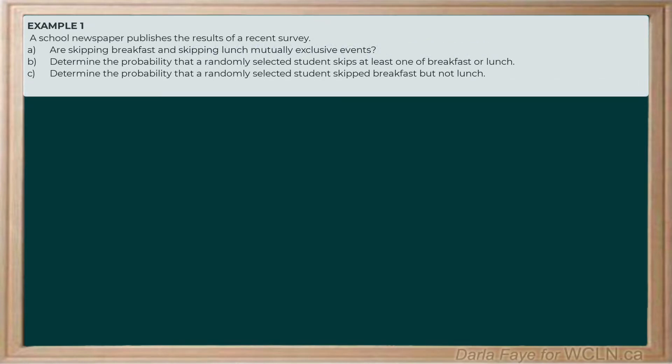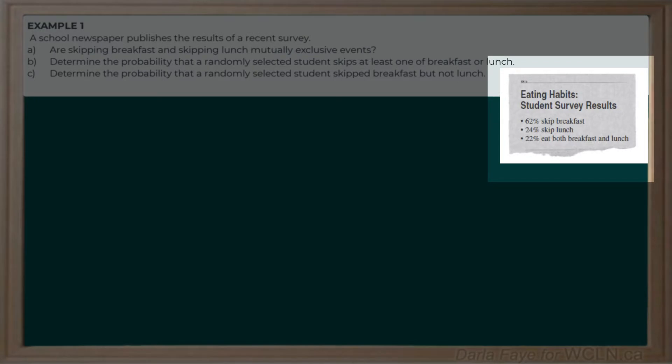Let's dig into our first example. In a school newspaper, the recent results of a survey are published. It says 62% of students skip breakfast, 24% skip lunch, and 22% eat both breakfast and lunch — meaning they are skipping neither breakfast nor lunch.